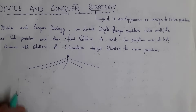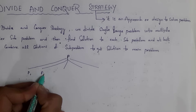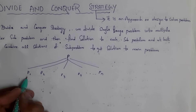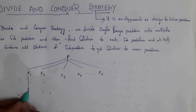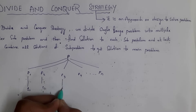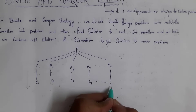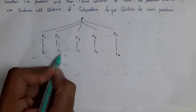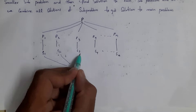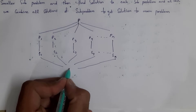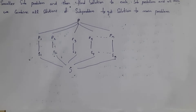For example, this large problem is broken into multiple small problems: P1, P2, P3, P4, and so on up to Pn. We need to find a solution to each sub-problem — solution 1, solution 2, solution 3, and so on. At last, we need to combine all these solutions of sub-problems into a single solution.